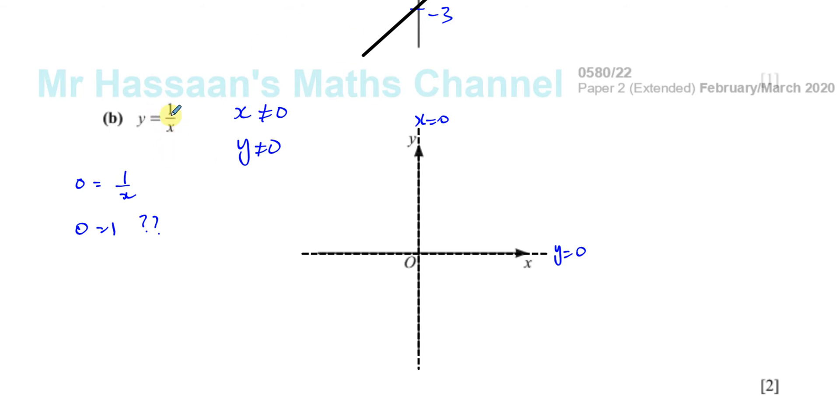Now how does y equals 1 over x behave? Most of you will have memorized that it looks like this. Memorizing it is fine, but understanding why it looks like that is even better. So, for example,